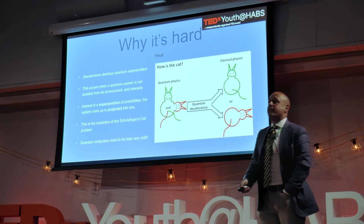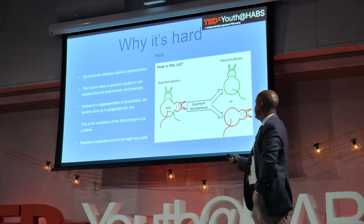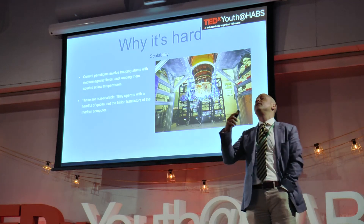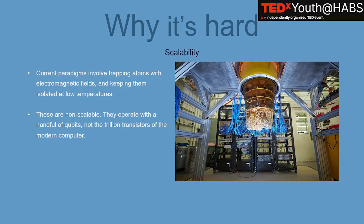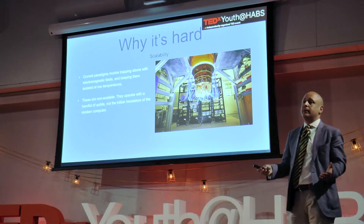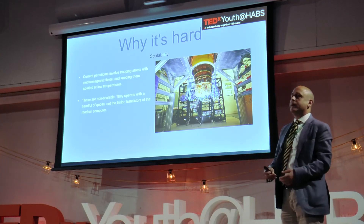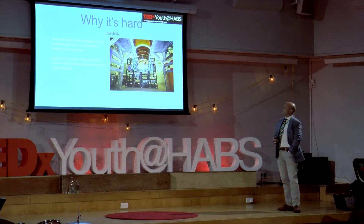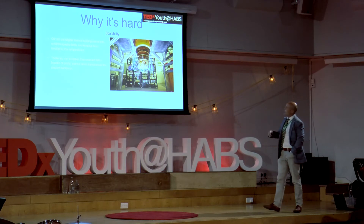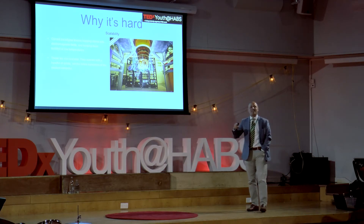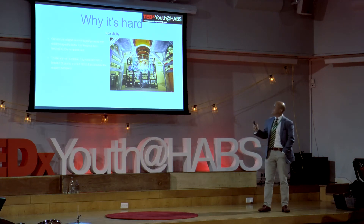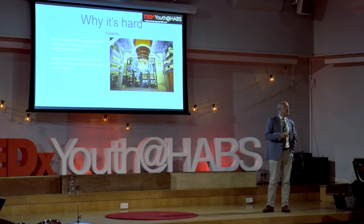Quantum computers need to be kept very cold and very isolated. Current paradigms — and this is a proof of concept built by Google at phenomenal cost — only have a few qubits, can't do a great deal, and are not scalable. Adding one more qubit is a whole equivalent engineering problem to everything that came before. Current paradigms involve trapping atoms with electromagnetic fields and keeping them isolated at very low temperature. They operate with a few handfuls of qubits, not the trillions of transistors we're used to in computers.